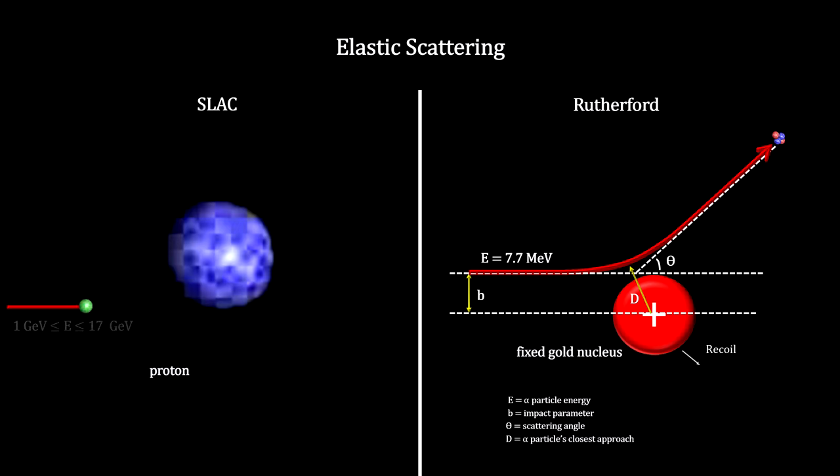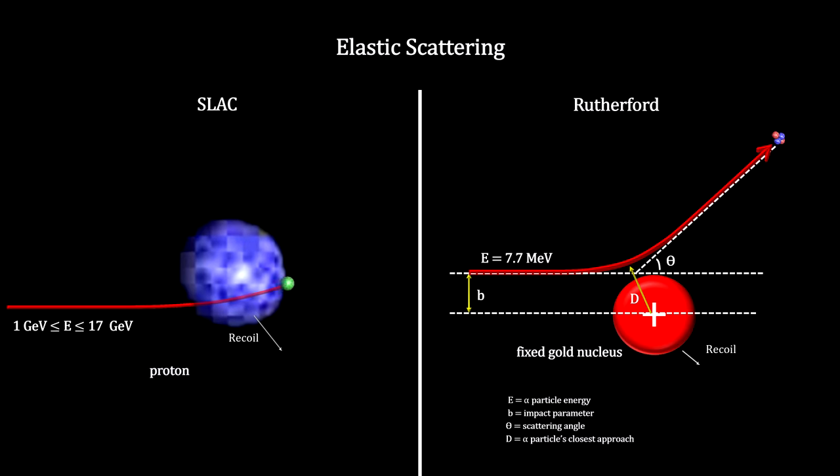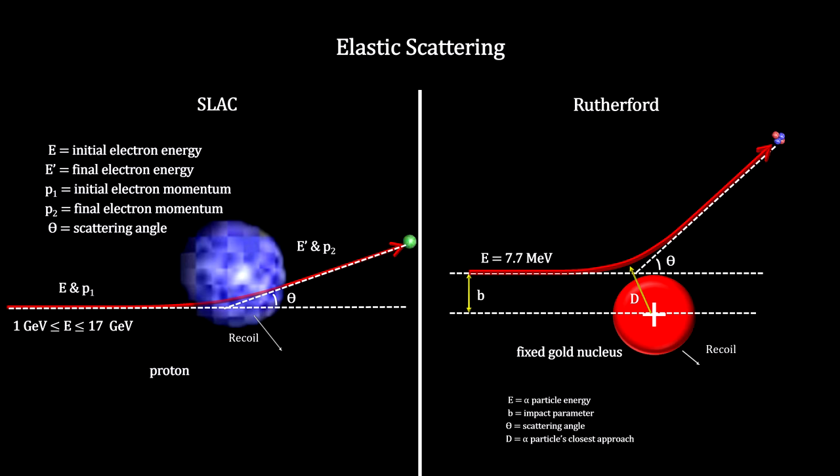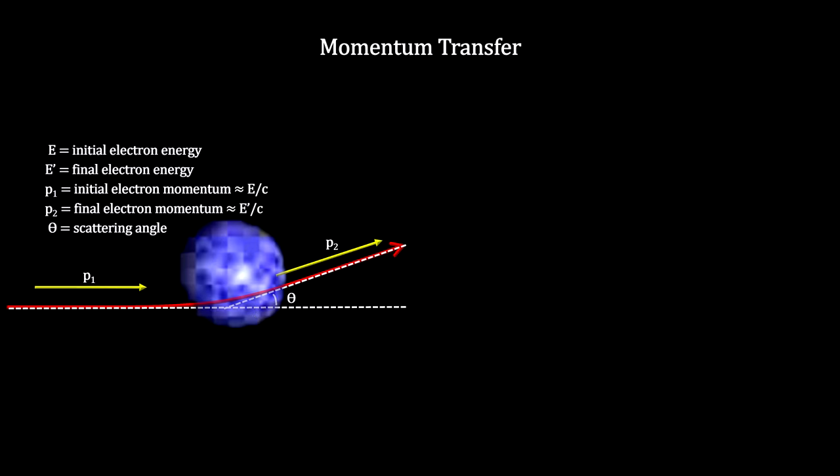The SLAC experiment could vary the incoming electron energy up to 17 giga electron volts. The Coulomb force was attractive, with significant target recoil when a high velocity electron collided with a target proton. The SLAC experiment was designed to examine this transfer of momentum from the electron to the proton at various electron energies and scattering angles, to find out if the proton's positive charge was distributed evenly throughout its volume.